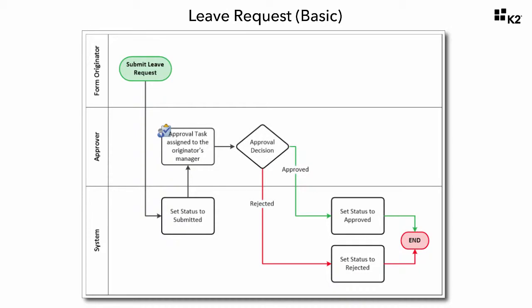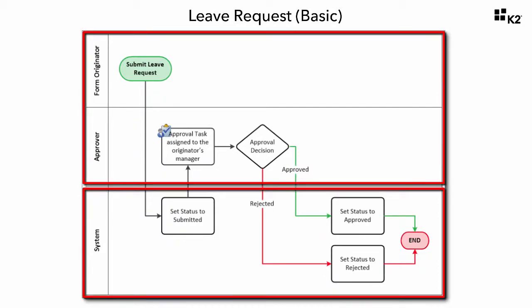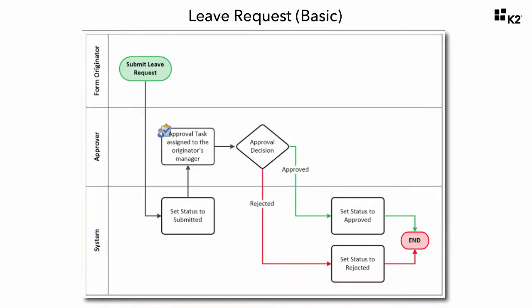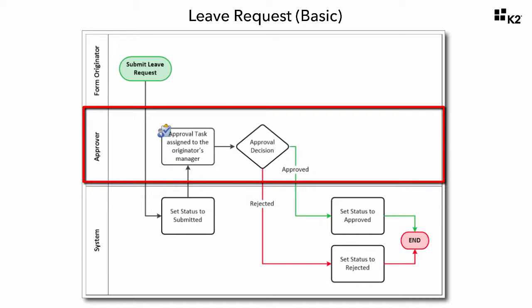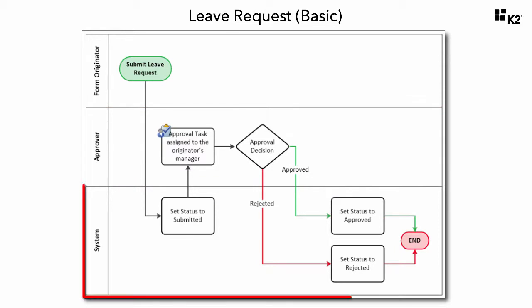This flowchart represents a swimlane format of our leave request workflow, where we have separated user tasks and system tasks into separate swimlanes for clarity. We have two swimlanes for user tasks: the first represents the form originator — the person submitting the leave request — and the second represents the approver, which in our scenario is the form originator's current manager. The third lane represents system tasks that K2 manages behind the scenes, such as updating records in the data source or sending email notifications through the workflow.